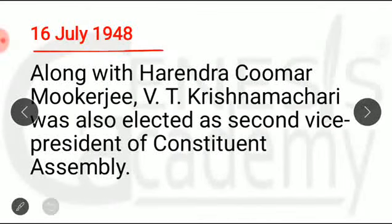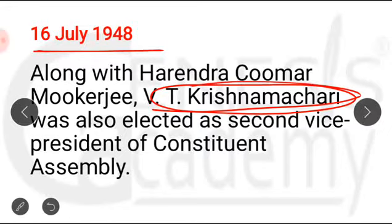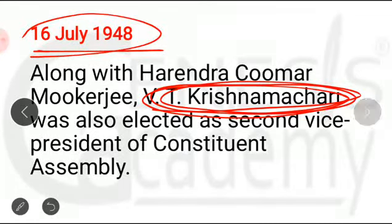After 16th July 1948, a question can come: who else was the Vice President of the Constituent Assembly? You have to remember that V.T. Krishnamachari was elected as an alternative Vice President, in addition to H.C. Mukharji, and he was elected on 16th July 1948.